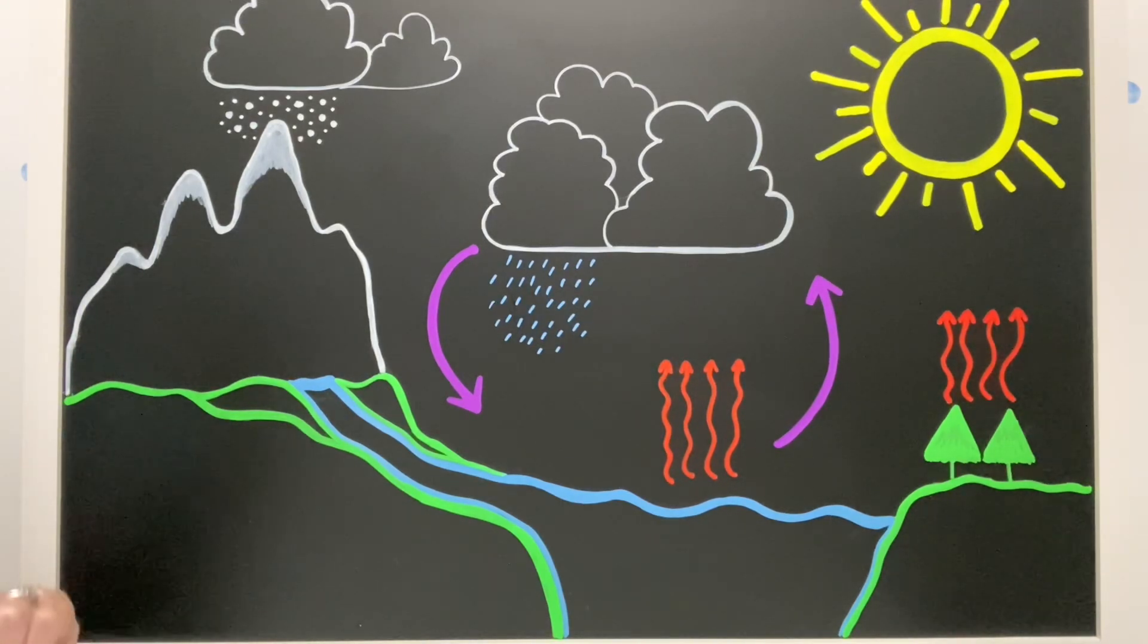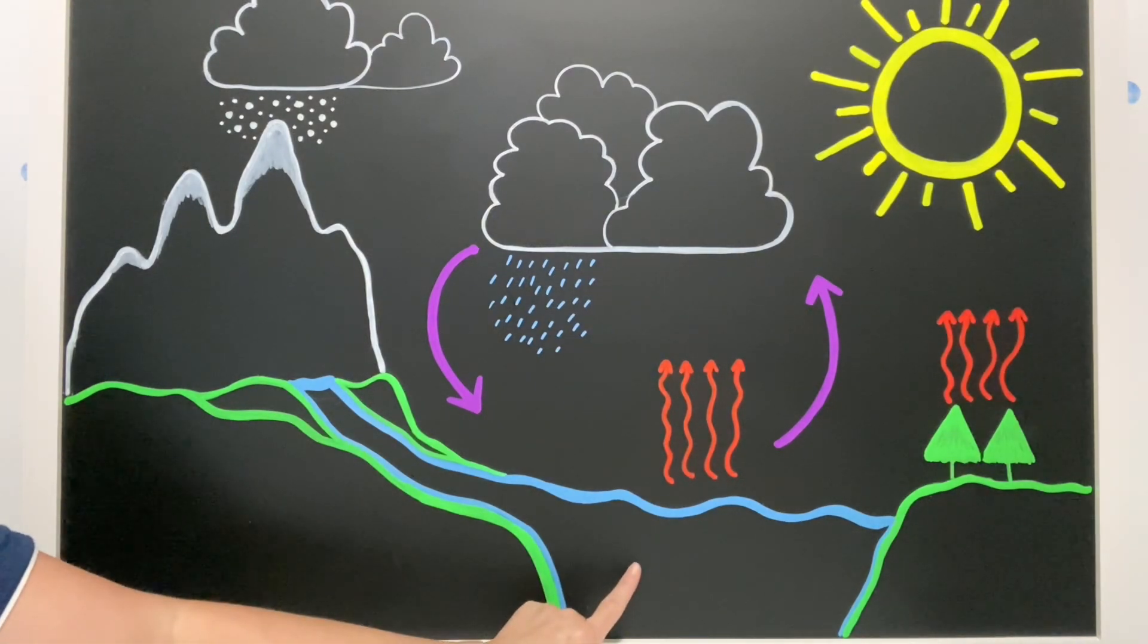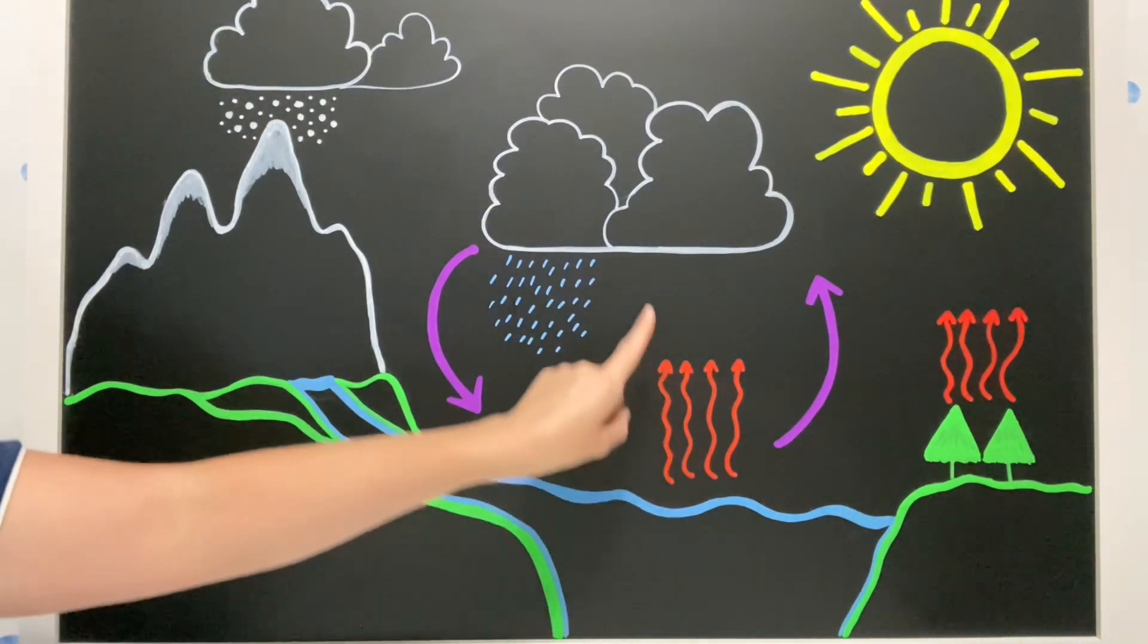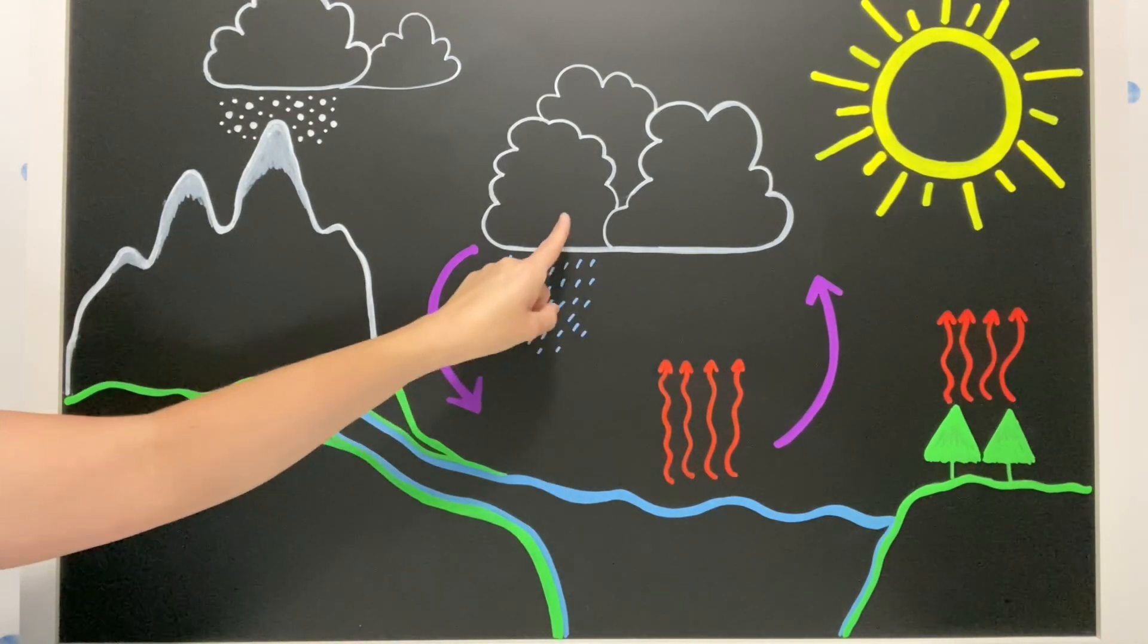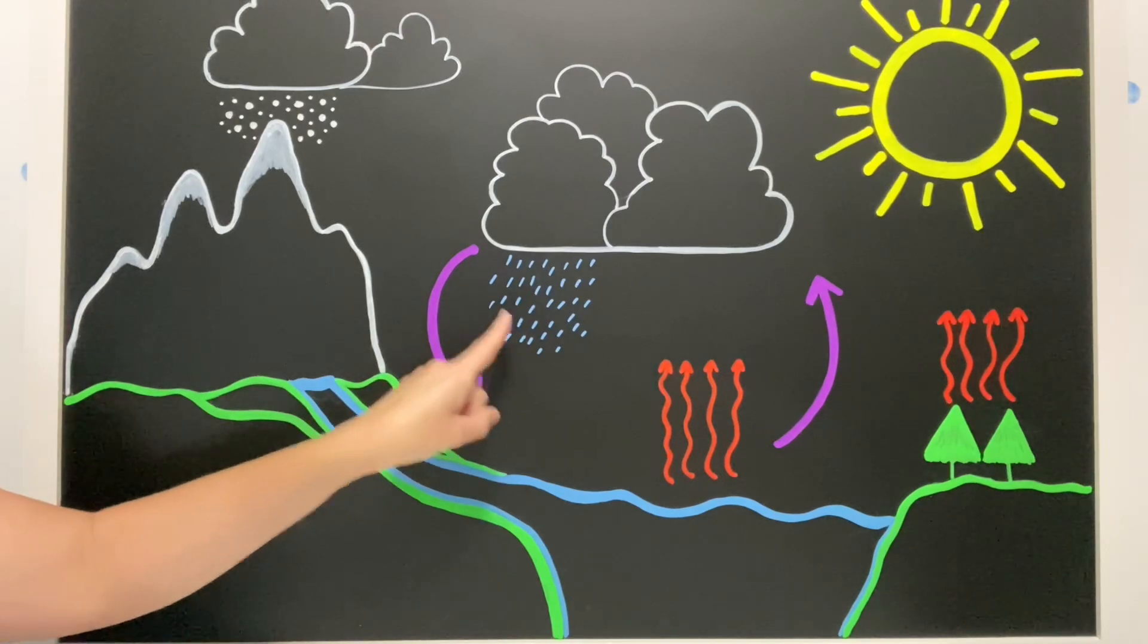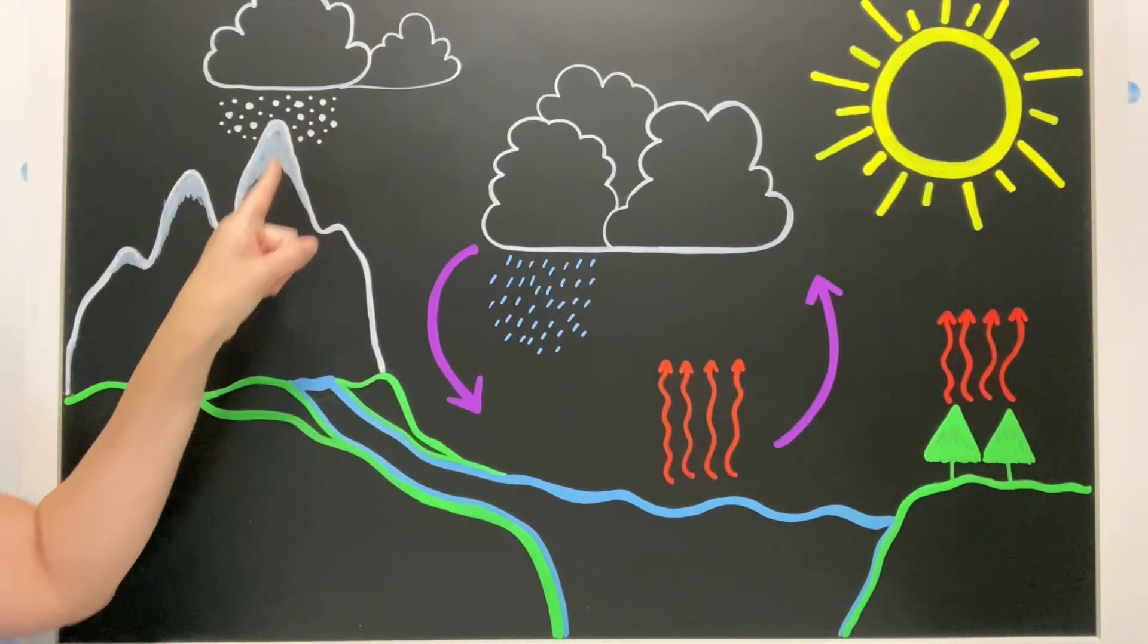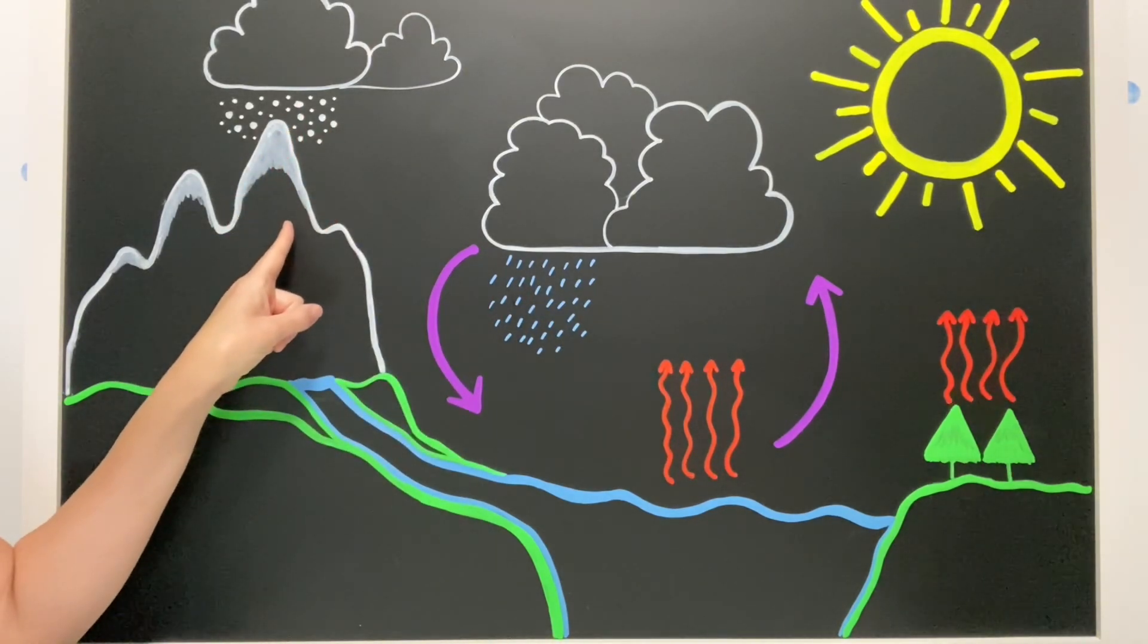But what I want you to know is that the water that we have here on the ground is the same water we get into the sky. And it's the same water that's in the clouds and the rain and the snow and even the snow that's in the mountains.